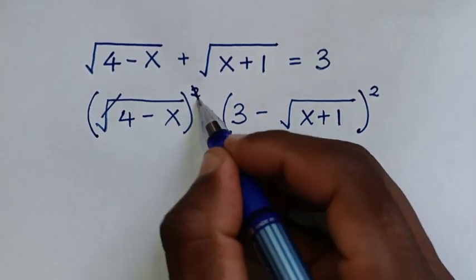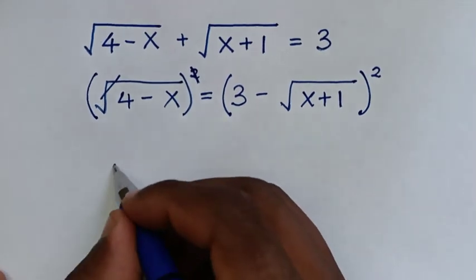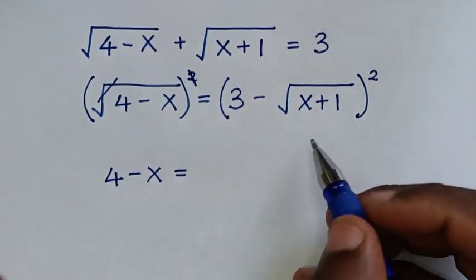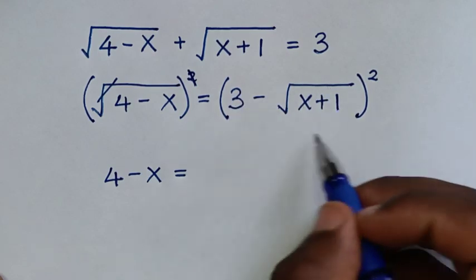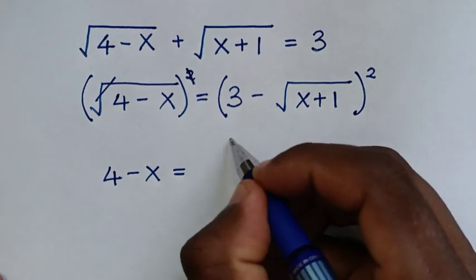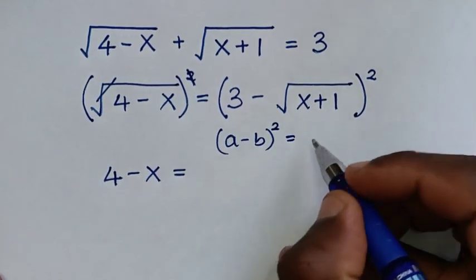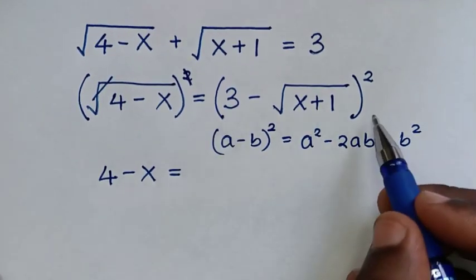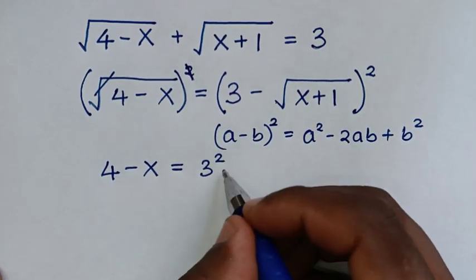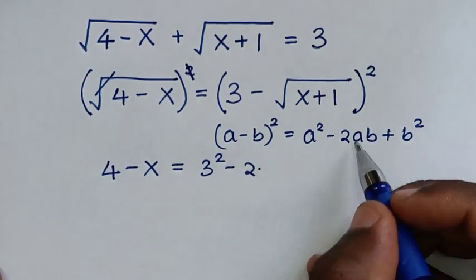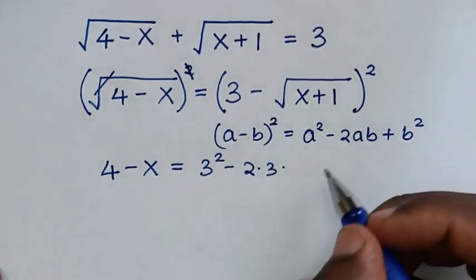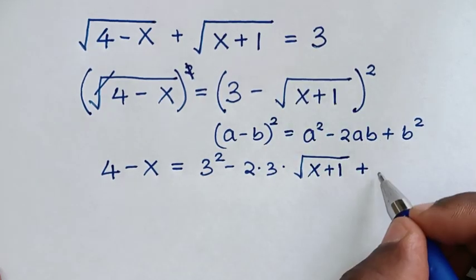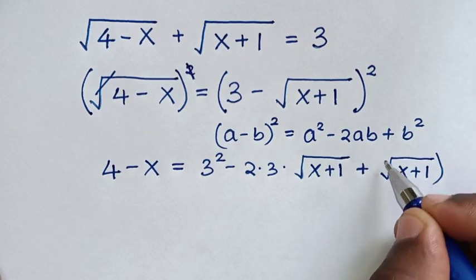The square root will cancel the square, so the left side gives 4 minus x. The right side is in the form (a minus b) squared, which expands as a squared minus 2ab plus b squared. Here a is 3 and b is square root of (x plus 1), so we expand accordingly.